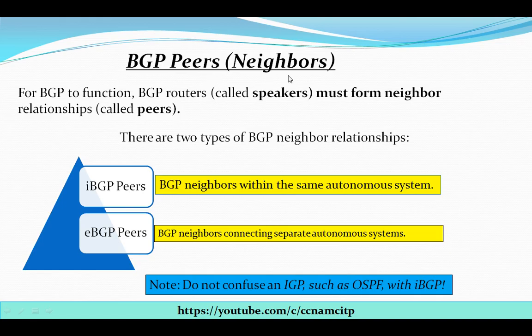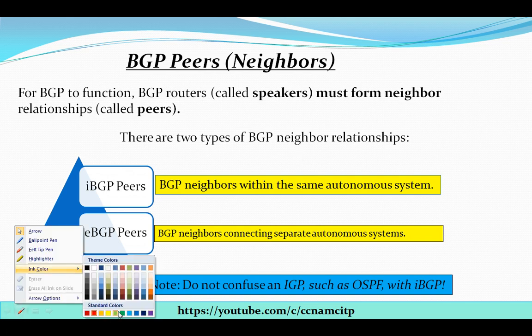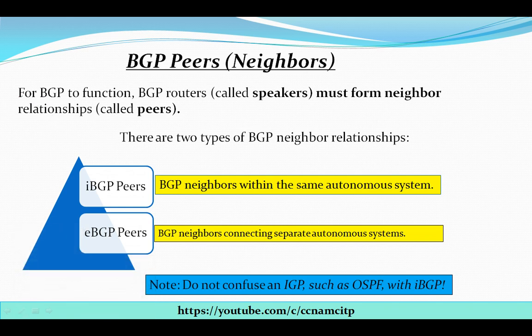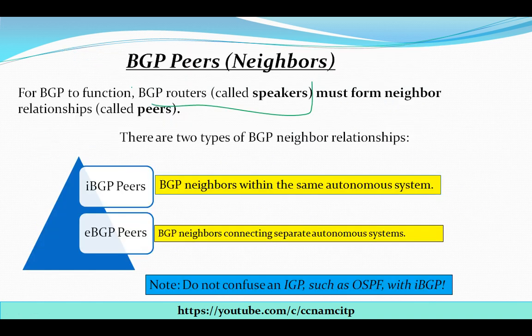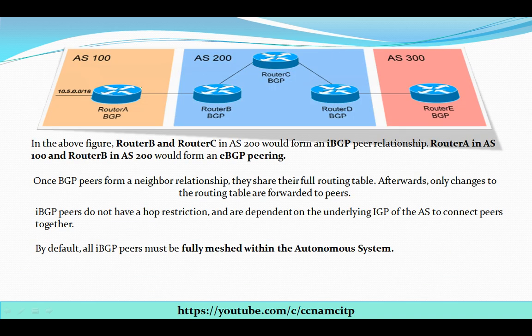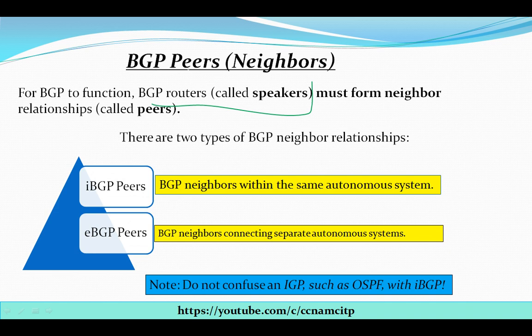In this video we're going to learn about BGP neighbors — how routers create relationships with other routers on the network. For BGP to function, BGP routers called speakers must form a neighbor relationship called peers. For example, if we have five or six routers here, they will be called speakers, and the relationship between them is called peers in BGP — Border Gateway Protocol.